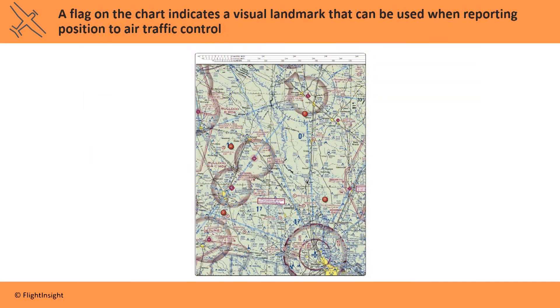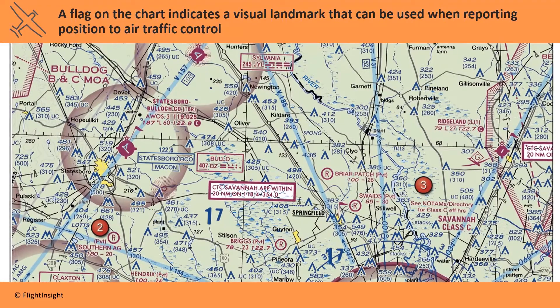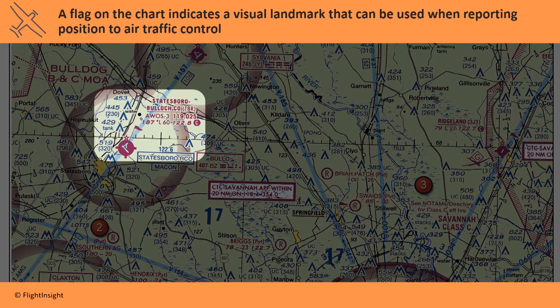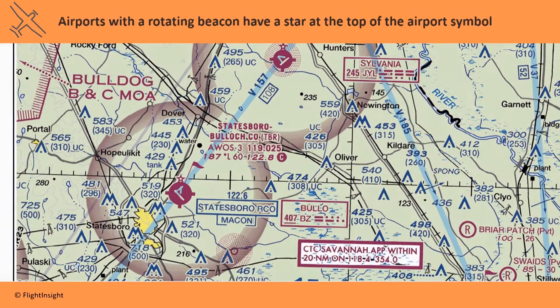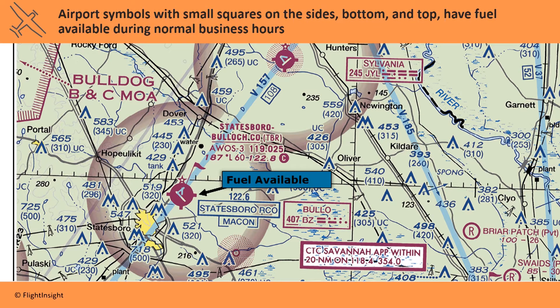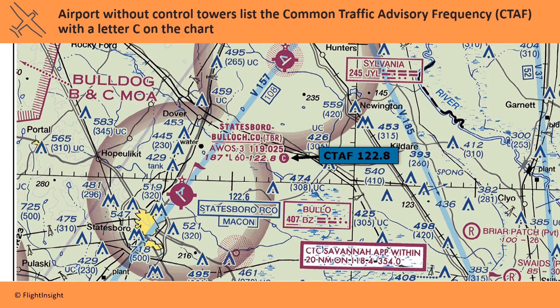Visual landmarks like airports or geographic features are depicted with a flag symbol on the chart. This indicates a visual landmark that can be used when reporting position to air traffic control. Airports with a rotating beacon have a star at the top of their airport symbol. Airport symbols with small squares on the sides, bottom, and top have fuel available during normal business hours. Airports without control towers list the Common Traffic Advisory Frequency, CTAF, with the letter C on the chart.